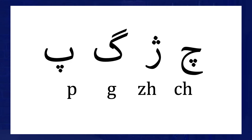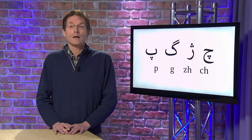Because the script was used for such different languages, it was often adapted a little when it was adopted for other languages. For example, the Persian Arabic script you see in this poem has created four new letters for sounds that do not appear in the Arabic language, but they do in Persian. Those are the B, G, J and C.